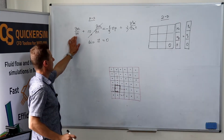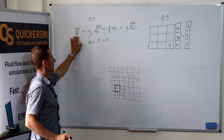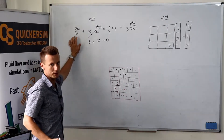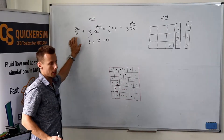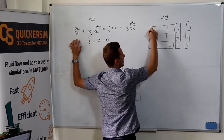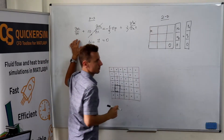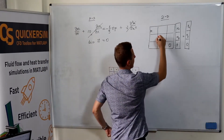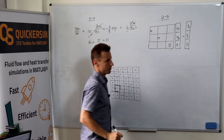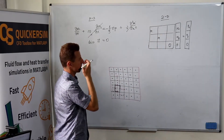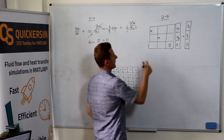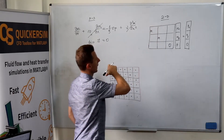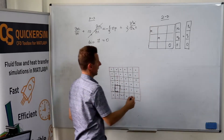If you discretize the unsteady problem, then you will have some matrix representing the inertia, and the inertia would be represented by some mass matrix. Then for the y component, obviously, the inertia for the y component will be represented in the corresponding block.